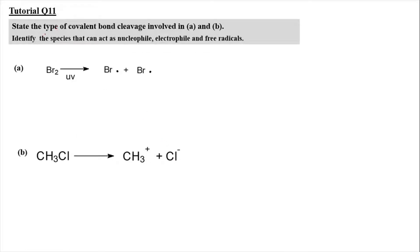For tutorial question 11, we have to state the type of covalent bond cleavage involved in A and B. We have to identify the species that can act as a nucleophile (Nu⁻, which has a lot of electrons), electrophile (E⁺, less electrons), and the free radical. For part A, bromine molecule produces Br free radical and Br free radical. What happened here is Br and Br have the same electronegativity, and by applying UV, the two electrons are split equally — one bromine atom gets one electron each, denoted by a half-headed arrow, which refers to the transfer of one electron.